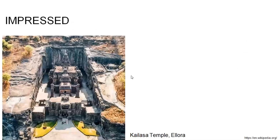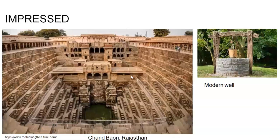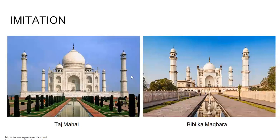We get impressed by the Kailash temple but can't even make a model of it — how would it get imitated in the vernacular? The monumental quality of vernacular is usually expressed in residences, not huge monuments, but we do get impressed. We travel, collect details, and try to imitate them in our vernacular. Imitation is a good way of learning. Bibi Ka Maqbara is an imitation of the Taj Mahal, but the scale, place, and money are not the same — what is produced is the central idea, not perfect millimeter-level detailing.